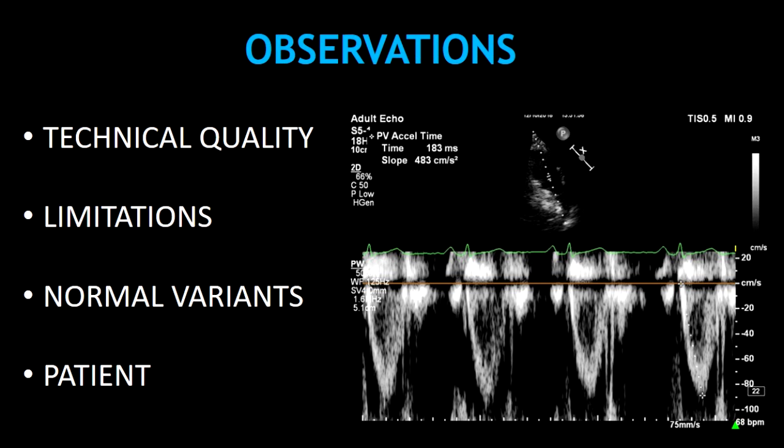Third, some examples of normal variants are a prominent Chiari network or a trivial tricuspid regurgitation. And fourth, how was the patient during the echocardiogram? Was the patient alert, collaborative, unconscious, or confused?